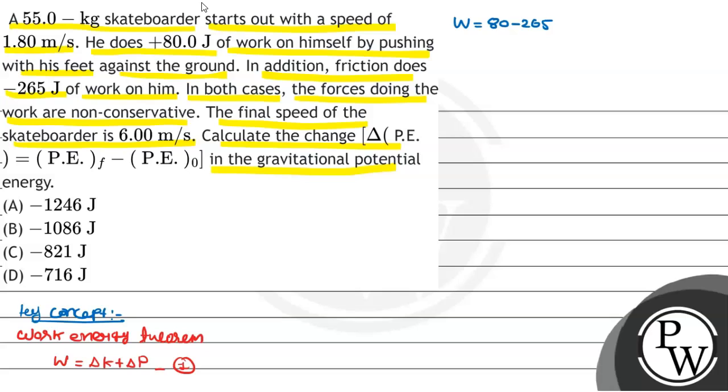The difference between 80 and minus 265 joule is - if you calculate this Bacho, the final answer for work done will be 185 joule.